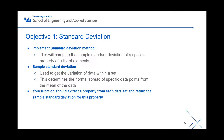Objective one is standard deviation. You're gonna be implementing the standard deviation method — refer to the handout for the specifics. It's gonna compute a sample standard deviation of a specific property of a list of elements. Sample standard deviation is used to get the variation of data within a set — like the normal bell curve where all the data points spread from the mean. Your function is basically gonna extract a property from each element of the dataset and return the sample standard deviation specific to that property.